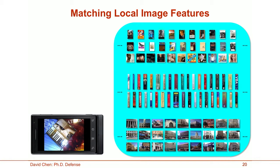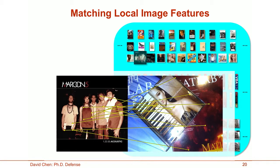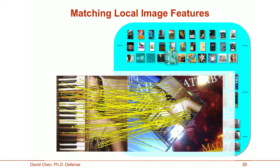Once we have the local image features, we can use them to match a query image taken by a mobile device against a database image. I show an example of feature matches between a database image and a query image. When I choose the wrong database image, the number of feature matches is very small and they are not geometrically consistent. This pattern continues until we reach the correct database image, where the number of matches is much higher and the correspondences are mostly geometrically consistent. This method works very well, but there is one major drawback: it is very slow. If we were to run this method on a database of 1 million images, it could take several hours, which is clearly unacceptable for the low-latency visual search applications we are targeting.